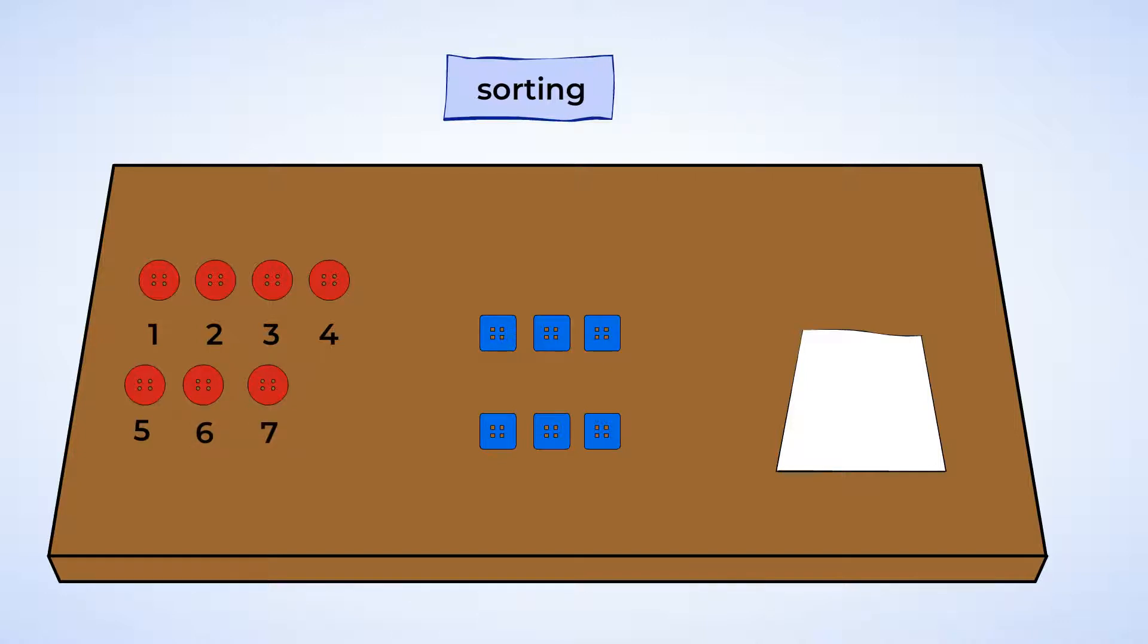You could make some cool pictures with seven red buttons. I wonder what Will will make. I bet he's making a robot. So, Will wanted to sort all the red buttons. But is there another way we could have sorted all the buttons?